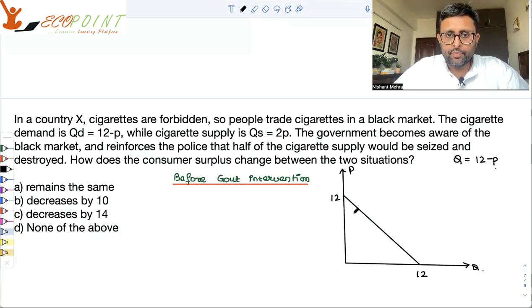So this is the demand function which I have. Qs is equal to 2P. You understand this is Q is equal to P. So Qs is equal to 2P, so if P is 1, Q is 2. P is 2, Q is 4.